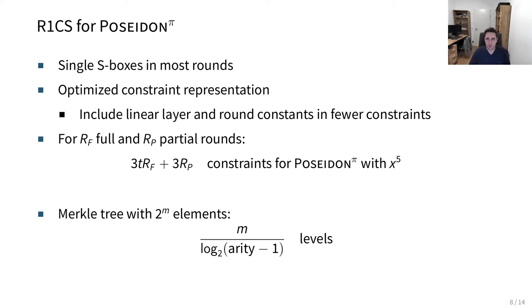The RF and RP number of full and partial rounds. If we have these numbers, then we can very easily compute the total number of constraints we need for some Poseidon π permutation, for example with the S-box x to the power of 5. Very similarly, we can also compute the number of levels which we would have in a Merkle tree with 2 to the power of m elements. Essentially, of course, this depends on the arity which we choose.